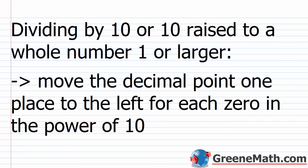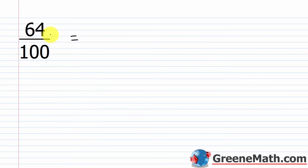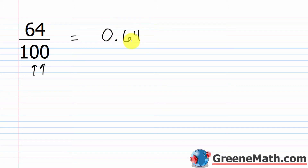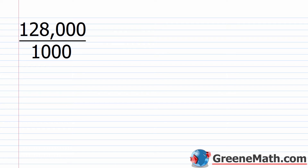We have a similar trick when dividing by 10 or a positive integer power of 10: we move the decimal point one place to the left for each zero in the power of 10. So it's left for division and right for multiplication. For example, 64 divided by 100 — two zeros — moves the decimal point two places left, giving 0.64. And 128,000 over 1,000 can be solved by canceling zeros.